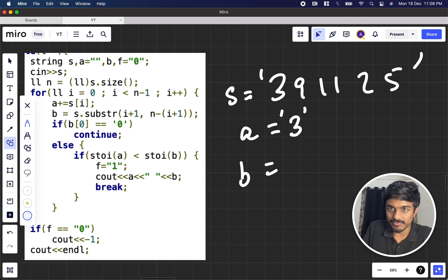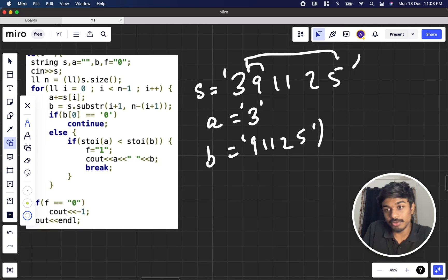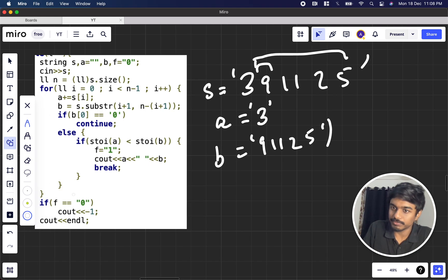For b, I do substring function s.substring(i+1). That is from 9 to n, n minus i plus 1. I need to get the size, which is n minus i plus 1, giving 9 1125. I check whether I convert it to integer using the stoi function. If 3 is less than this, then you can simply print it and come out of the loop.